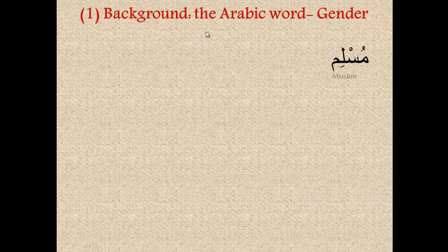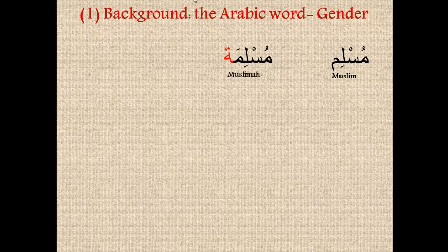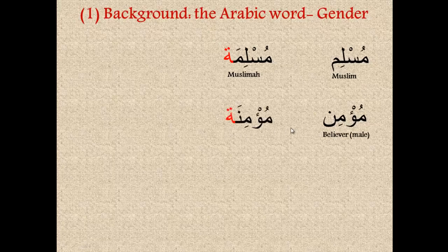Let's take the word muslim, which is a male adherent or follower of the Islamic faith. If you add a tamarbutah to the end of the word muslim, we get muslimah, which is the female version — a female follower of the Islamic faith. A second word, mu'min, means a male believer. If we add a tamarbutah to the end, we get mu'minah, which is a female believer.